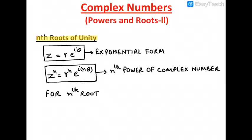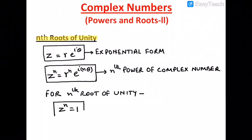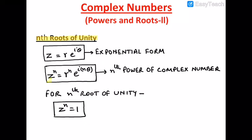For nth roots of unity, z must satisfy z^n = 1, where 1 is unity. So for z^n = 1, we substitute: r^n · e^(inθ) = 1 · e^(i·0), since e^0 = 1.